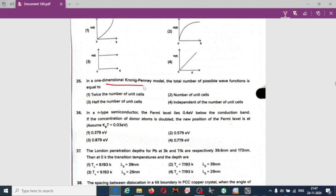Next one: in one dimensional Kronig-Penney model, the total number of possible wave functions is equal to option A, that is twice the number of unit cells.